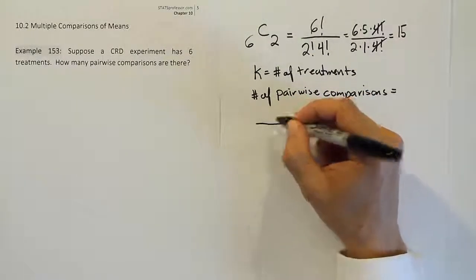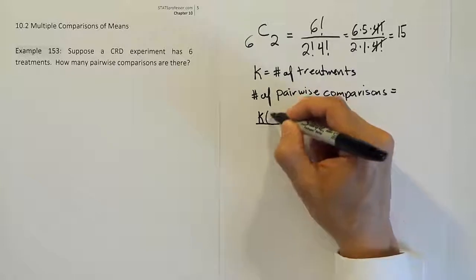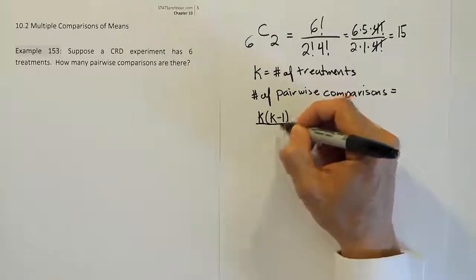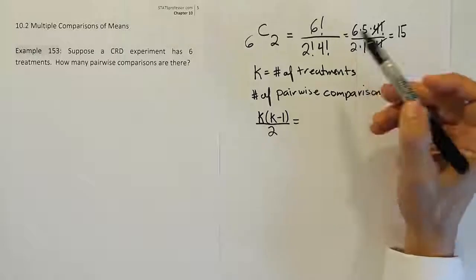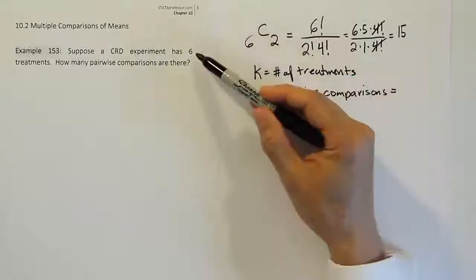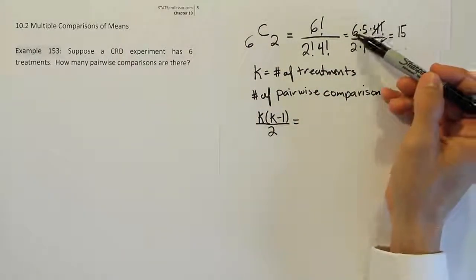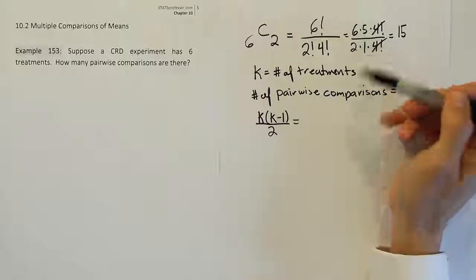the following fraction: it'll be k times k minus one all over two. That's exactly what we saw here right, we saw the k which was six treatments times one less than that or five divided by the number two basically.